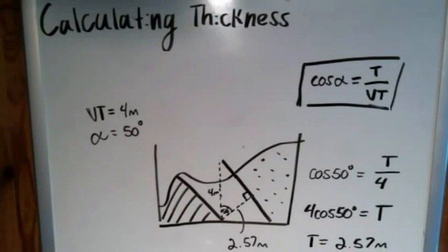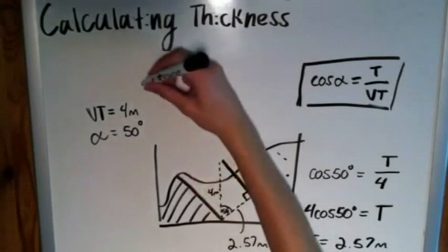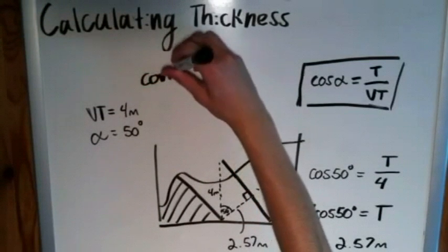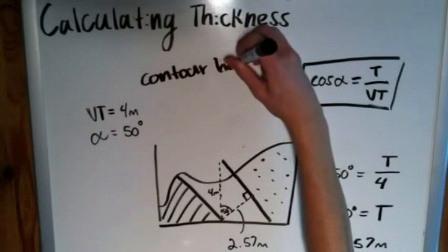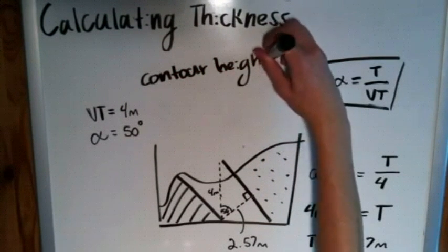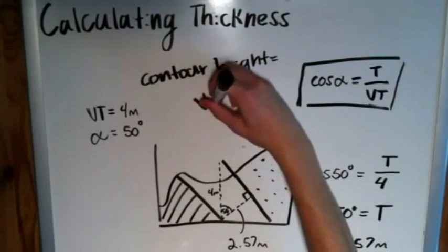And if you don't know what one of those is, that's fine, I haven't covered it on this channel. But if you are familiar with those, then the contour height at the point of interest on a topographic profile, that will actually be equal to VT, the vertical thickness.